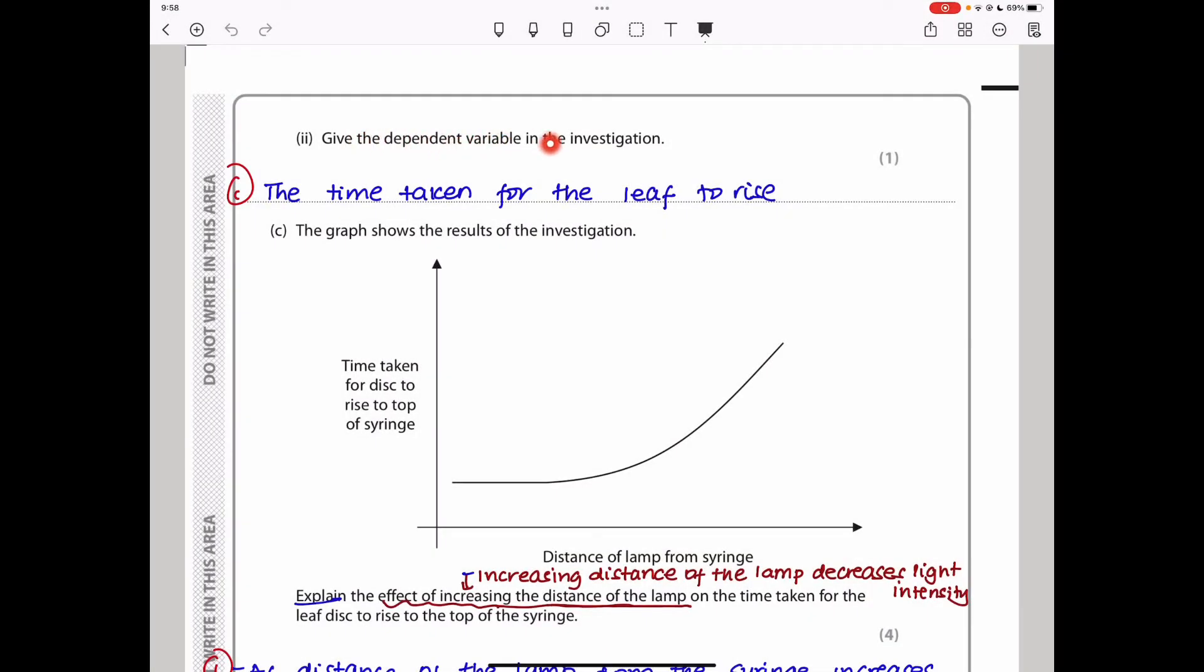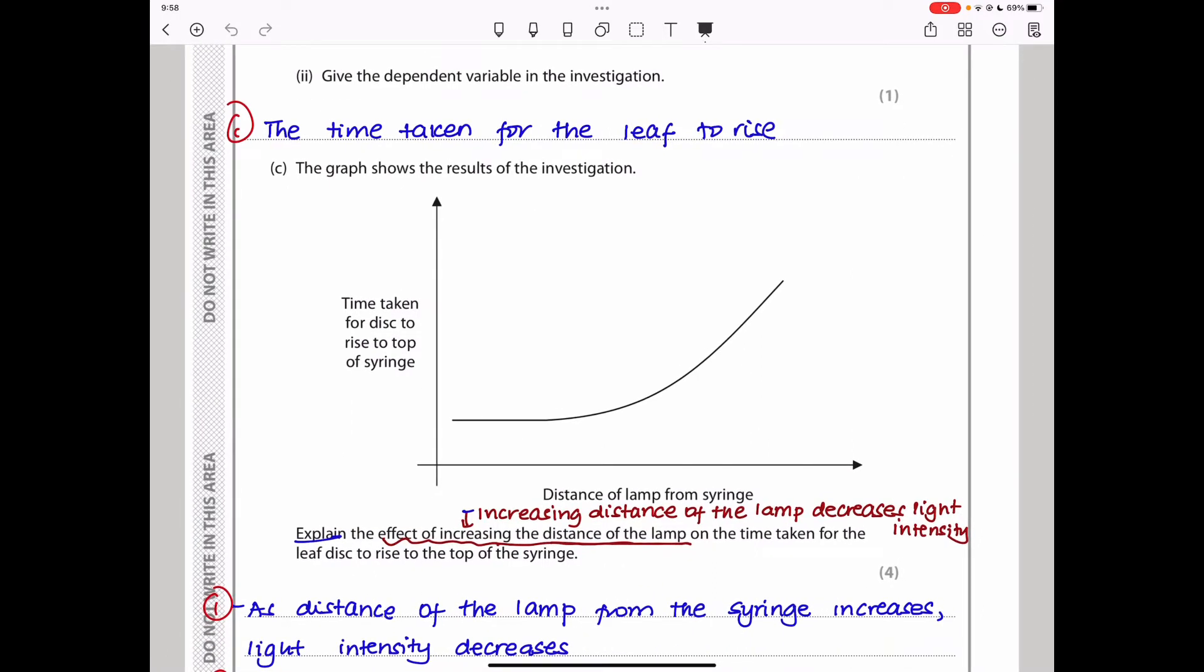Give the dependent variable in the investigation. The dependent variable is what is going to be measured. In this case, we are measuring the time taken for the leaf to rise. If you look at the graph, we can see the dependent variable is on the y-axis. The independent variable is what you vary, and the distance of the lamp from the syringe is varied. We always plot that on the x-axis.